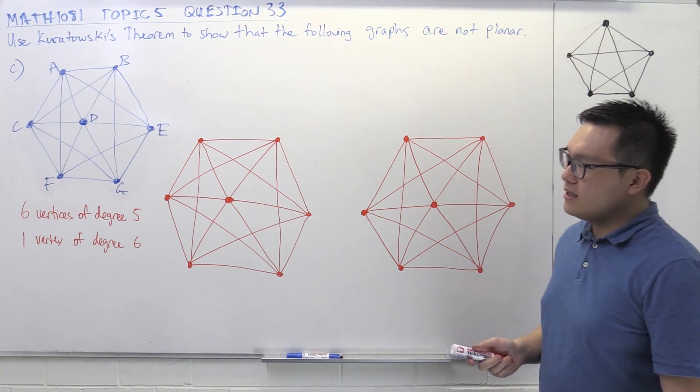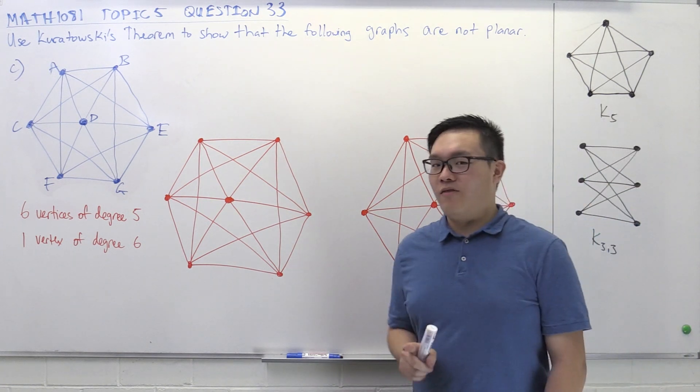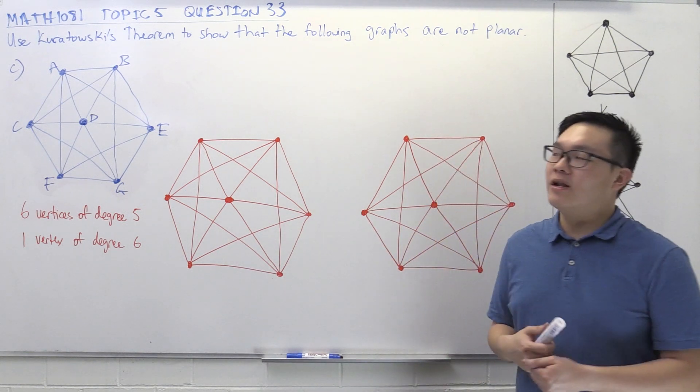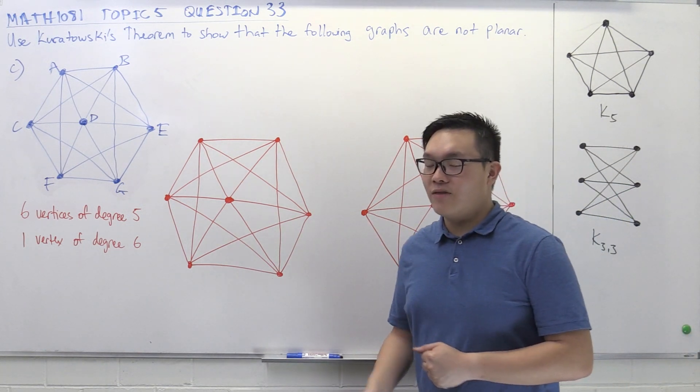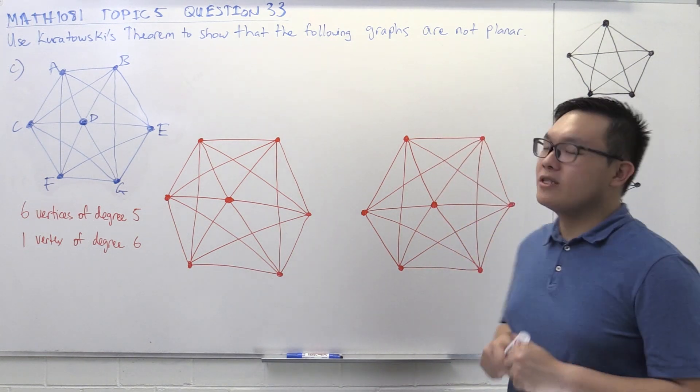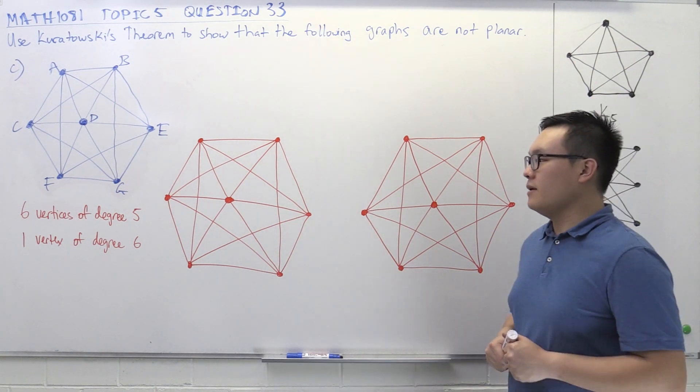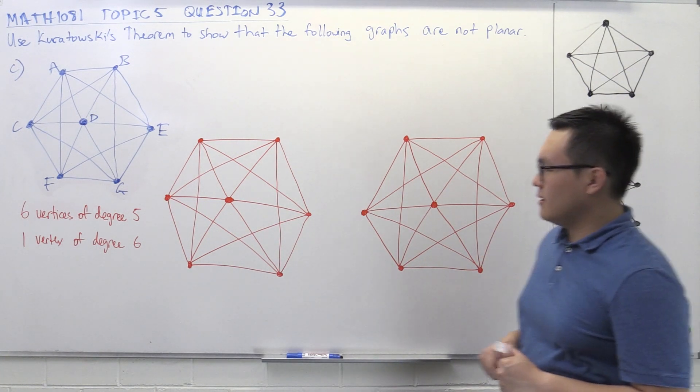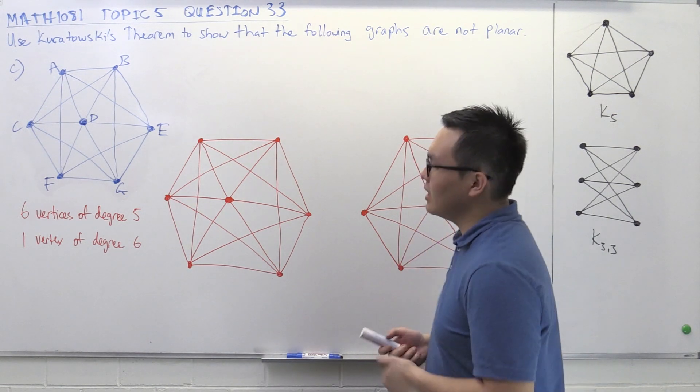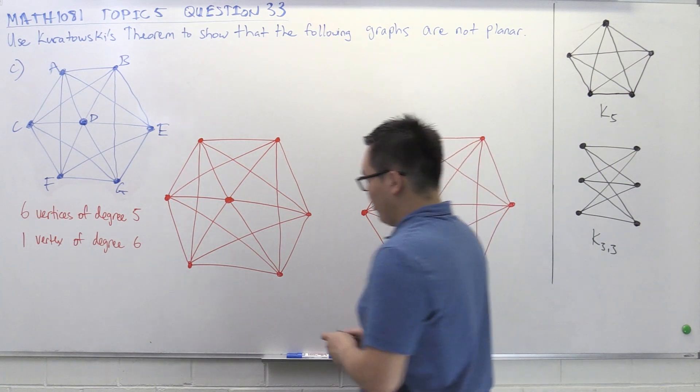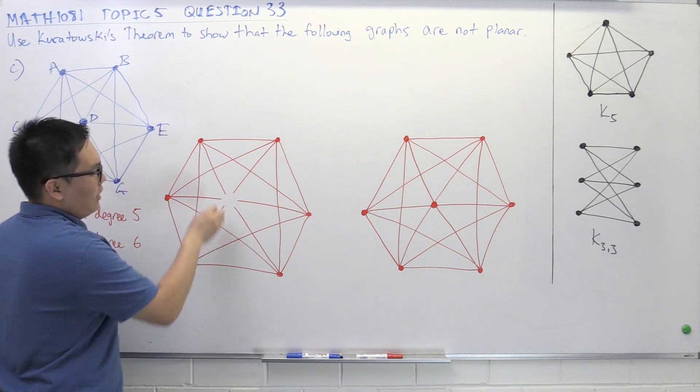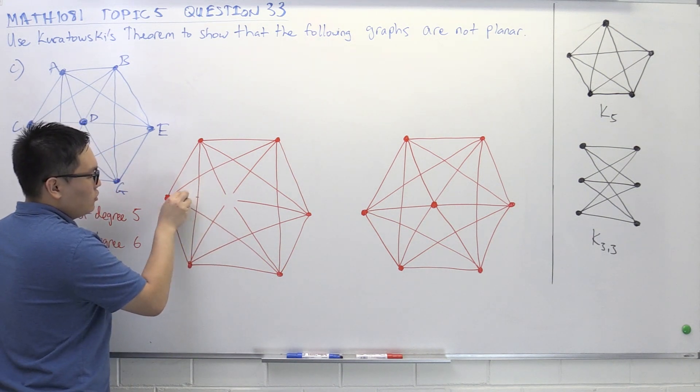But what we do know is that we need to remove at least one vertex, because if it turns out to be a K5, we need to remove two vertices, but if it turns out to be K33, we need to remove one vertex. So let's start playing around with this by removing one vertex. Let's say I want to remove the vertex in the middle. I'm going to remove this vertex in the middle, but then I'm going to remove all of the edges coming out of it. So there should be six of them.